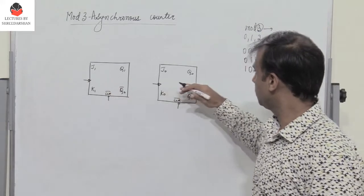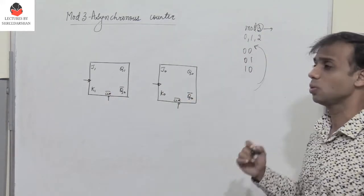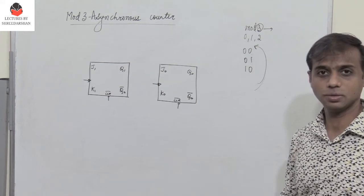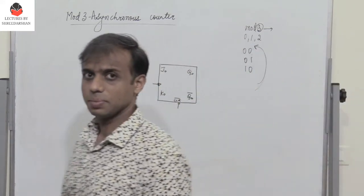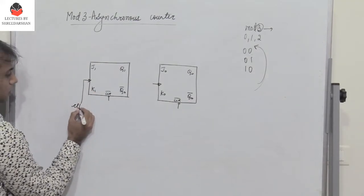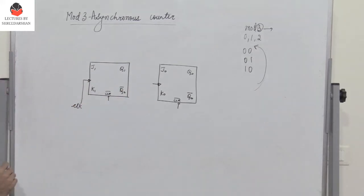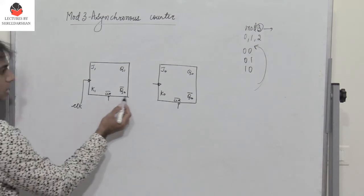Now these flip-flops have to come back to state 00 after 10. So what should be done? For that to happen, let me give the clock pulse to the first flip-flop. I've taken two JK flip-flops, both negative edge triggered.